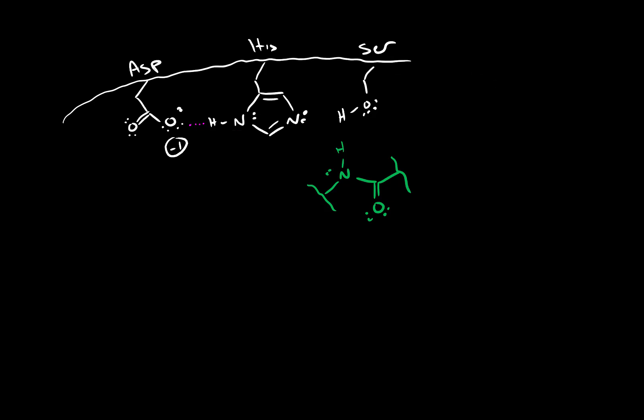In the very first step, we have this really reactive lone pair on this nitrogen. It's so reactive that it's able to reach over here and deprotonate the serine. This is pretty surprising because this alcohol group has a really, really high pKa, meaning it's really hard to deprotonate. But the chemical environment that this active site generates allows it to do so.